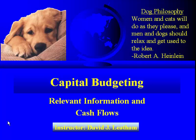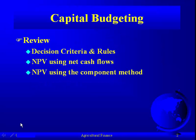Now that we have the net present value outlined, we're going to get into the bigger picture of capital budgeting and talk about relevant information and cash flows. In the previous lecture, we talked about the decision criteria and rules. We introduced the net present value and the internal rate of return in the context of the mechanical post hole digger, and we calculated the net present value based on the cash flow method.